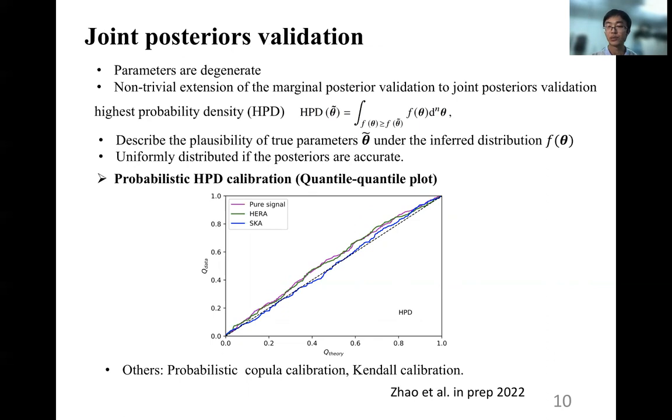Then we adopt a non-trivial extension of the marginal posterior validation to joint posterior validation. And one of the statistics we adopt is the highest probability density, which describes the probability of the true parameters under the inferred distribution. And it should be uniformly distributed if the posteriors are accurate. We evaluate calibrations using the so-called probabilistic HPD calibration, where we also make the quantile-quantile plots. Other methods we adopt are the probabilistic Copsner calibration and Kendall calibration.